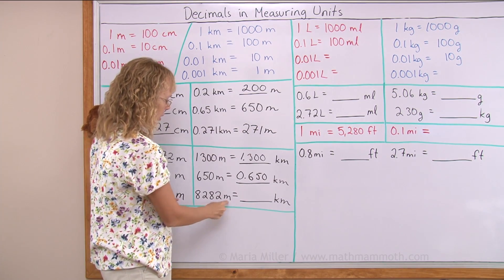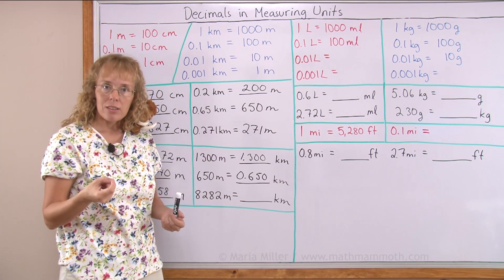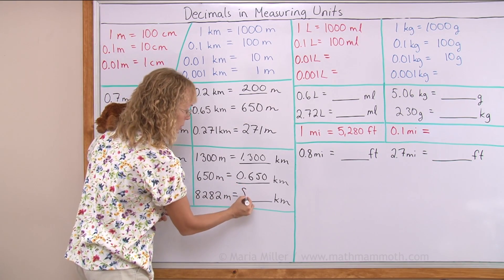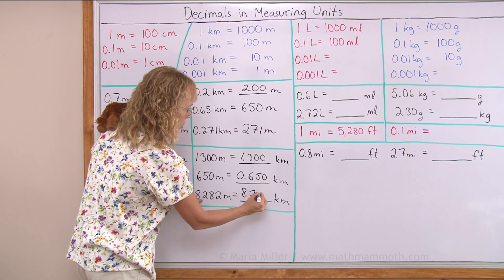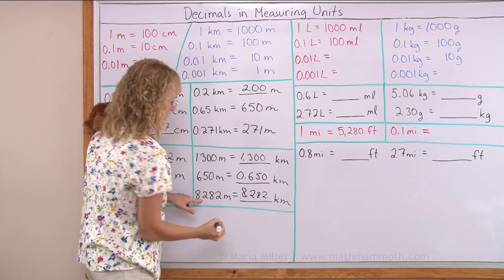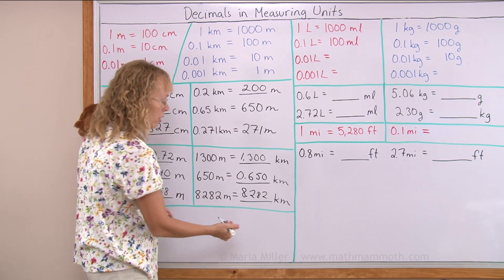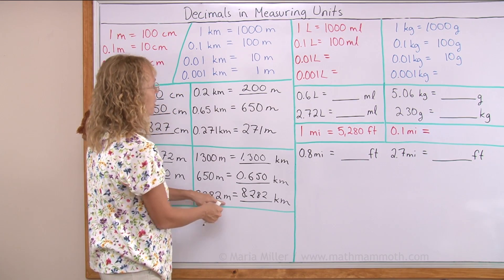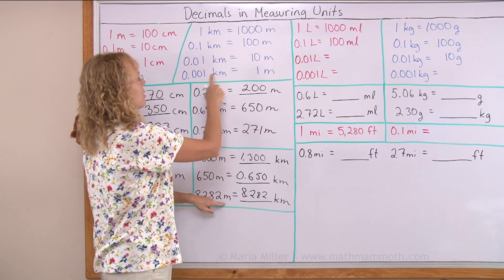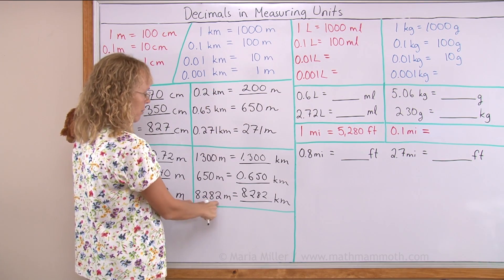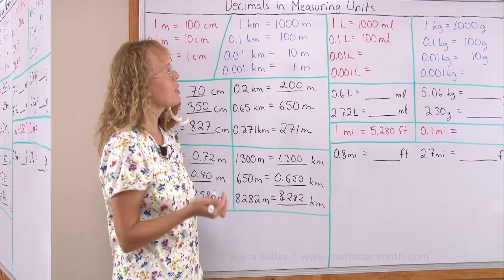8,282 meters. 8,000 meters is whole eight kilometers. And then the rest of it follows. So that's pretty easy. But it also makes sense because 282 meters, each individual meter is a thousandth part. So these make 282 thousandths of a kilometer.